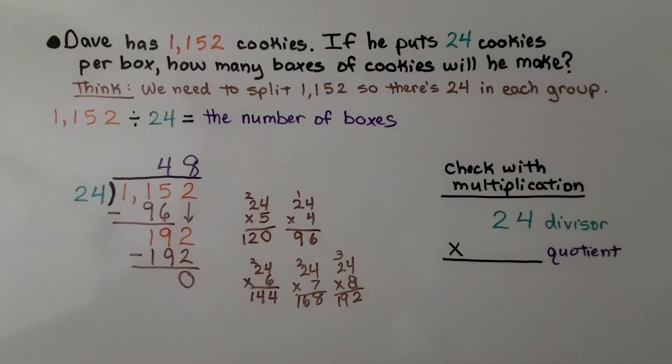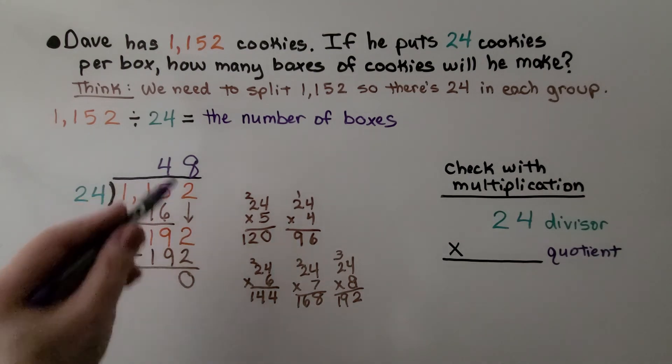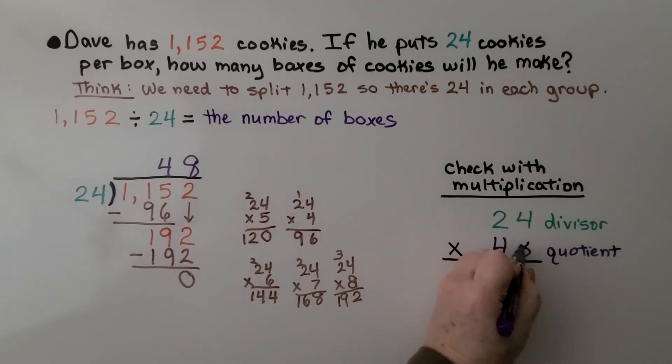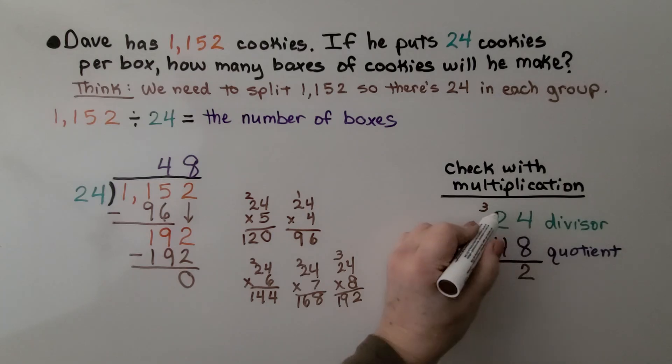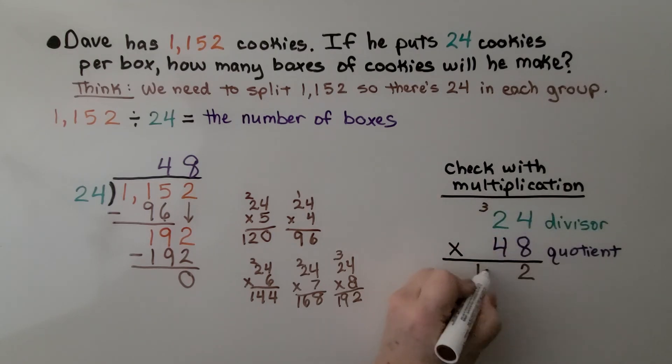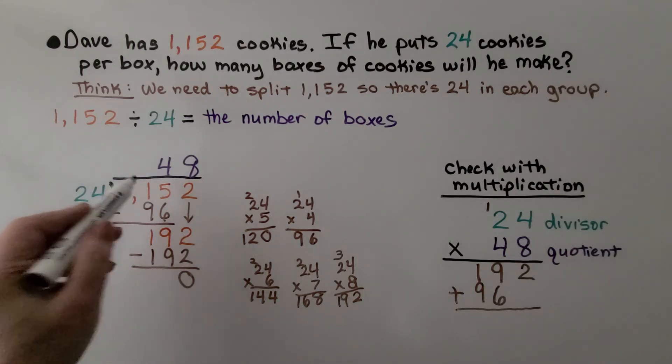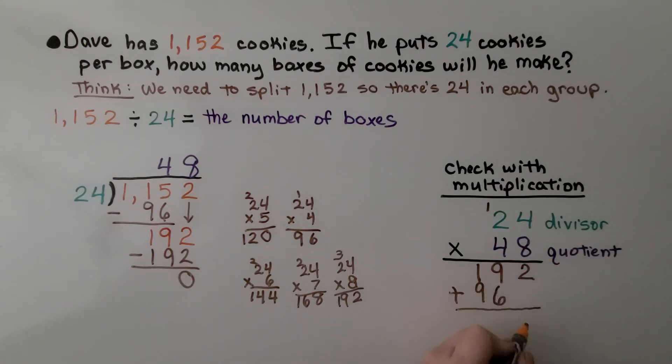And we can check it with multiplication. We multiply the divisor 24 by 48, the quotient. We do 8 times 4 is 32. 8 times 2 is 16 plus 3 is 19. Now we do the tens. 4 times 4 is 16. We'll put our answer here because we're doing the tens. 4 times 2 is 8 plus 1 is 9. We add these, and if it equals the dividend, then we know we did it correctly. We have a 2, 9 and 6 is 15, regroup the 1. Look at that, 1,152. That's our dividend. We know we did it correctly.